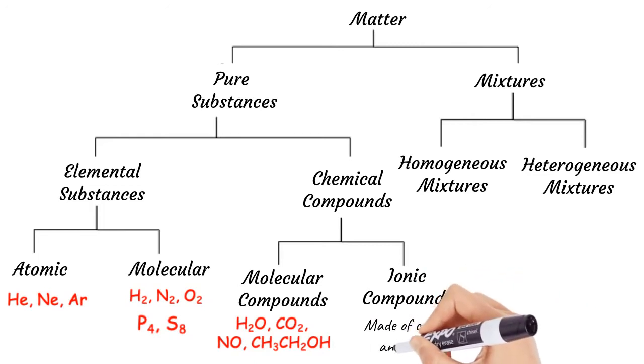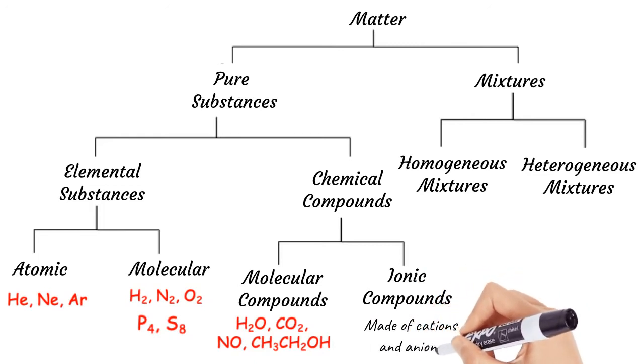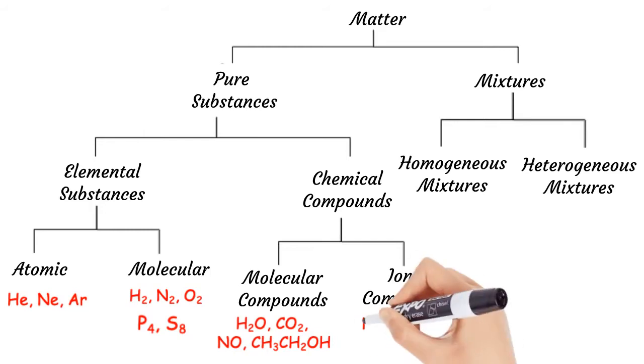Usually cations are metallic elements and anions are made of non-metallic elements. In general, if we see a compound that contains a metallic element, that compound is probably an ionic compound. Some examples of ionic compounds are sodium chloride, calcium carbonate, copper sulfate, and ammonium nitrate.